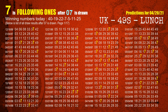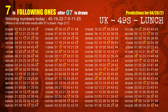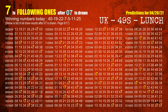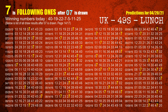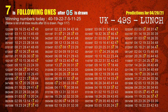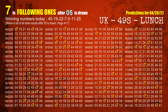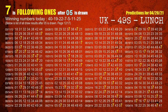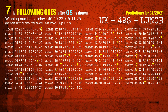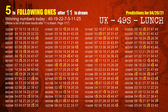The fourth winning number is 07. The most frequently following units digit is 7 when 07 is the winning number in the last draw. The fifth winning number is 05. The most frequently following units digit is 7 when 05 is the winning number in the last draw. The sixth winning number is 11. The most frequently following units digit is 5 when 11 is the winning number in the last draw.